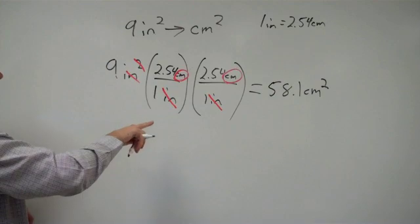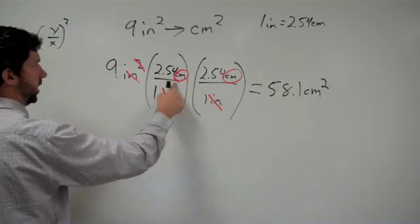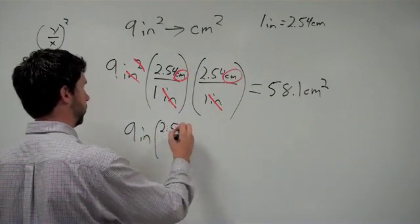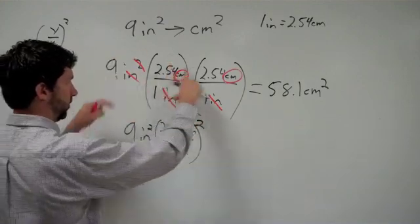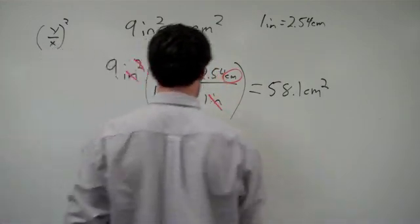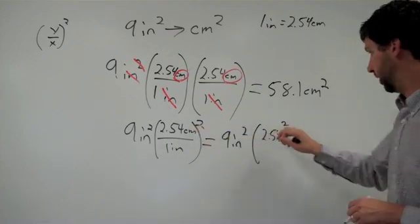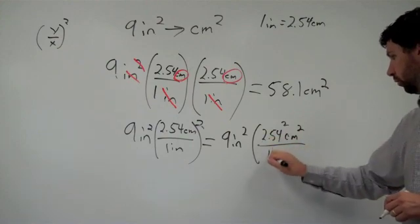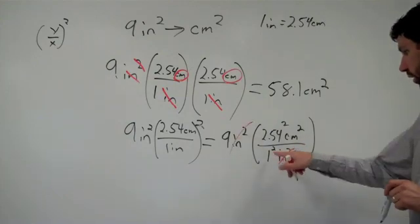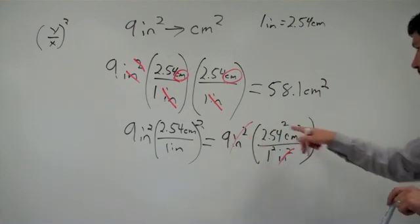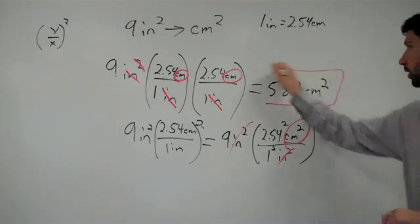Now, the one thing about this is that it can be easier than this. Instead of doing this, I can just say we've got 9 inches squared times 2.54 centimeters over 1 inch, and we're just going to square this whole conversion factor. That's the same as taking 9 inches squared times 2.54 squared centimeters squared over 1 squared inches squared. So my inches squared cancels with inches squared. I'm dividing by 1 squared, which is just like dividing by 1. Then I have 9 times 2.54 squared, and I'm left with centimeters squared as my units. So there's our final answer.